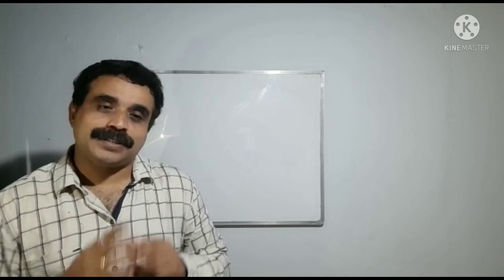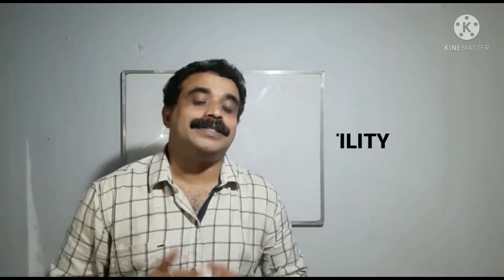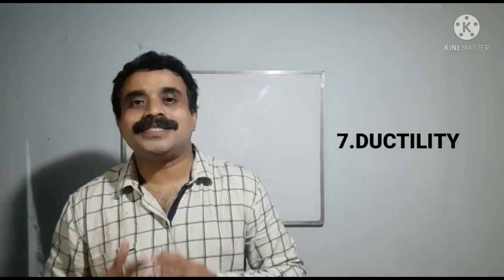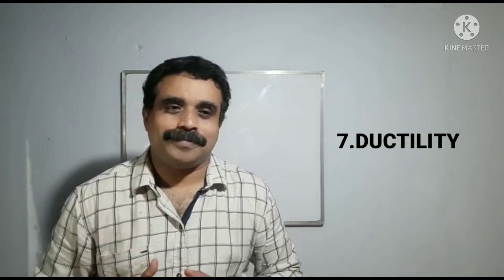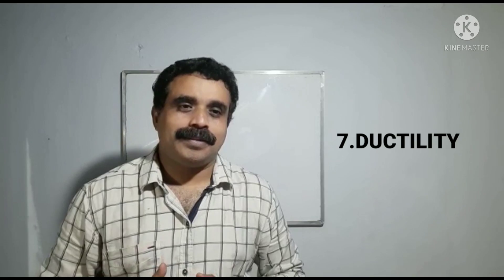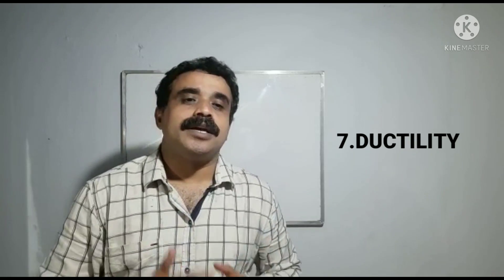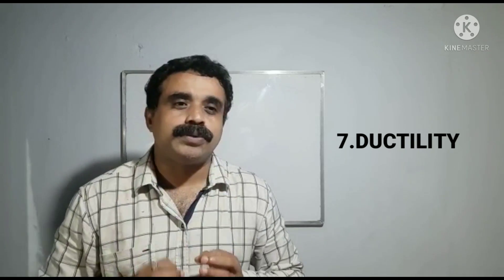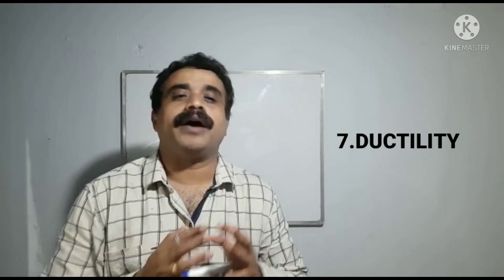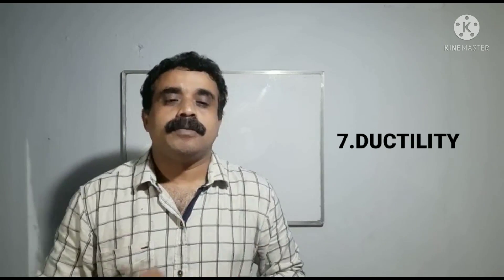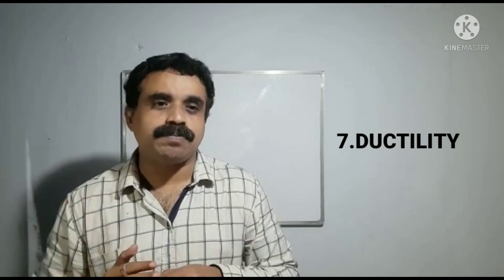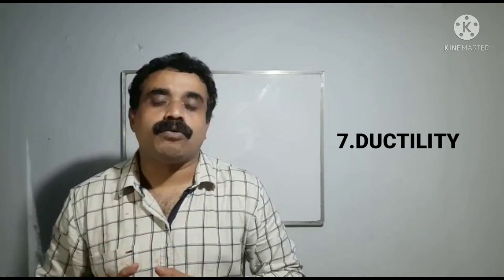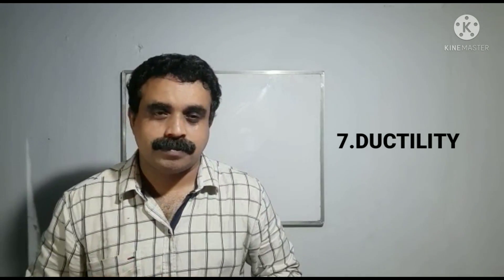Property number seven: ductility. Metals are ductile, which means metals can be drawn into thin wires. Because of this property, wires are made up of metals.